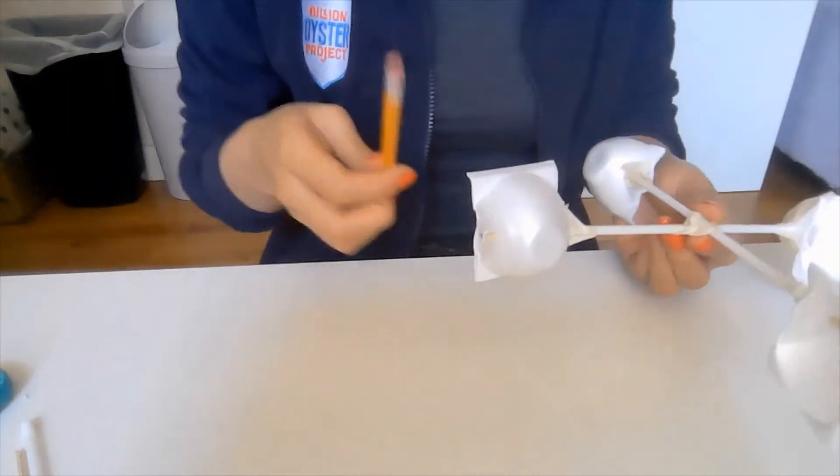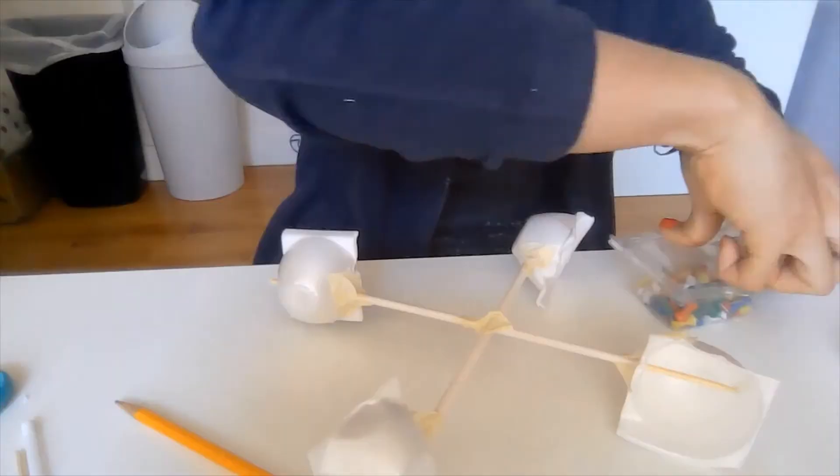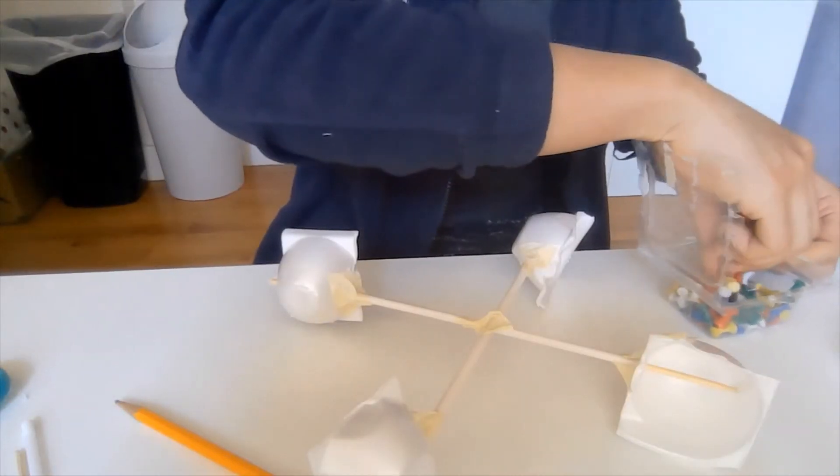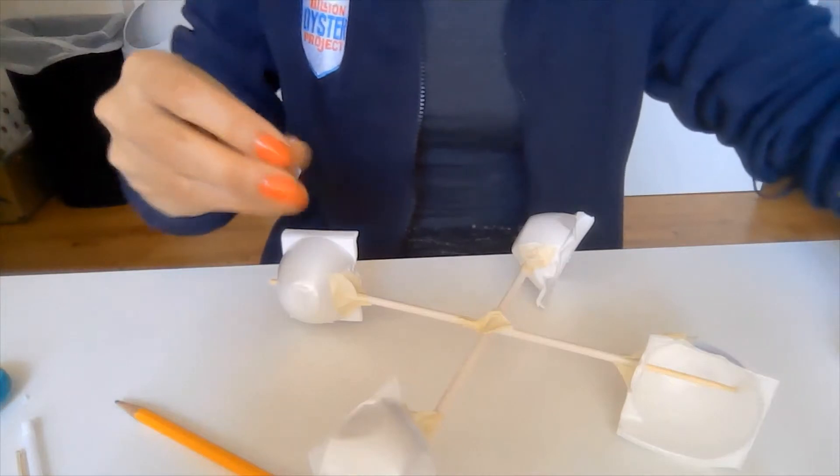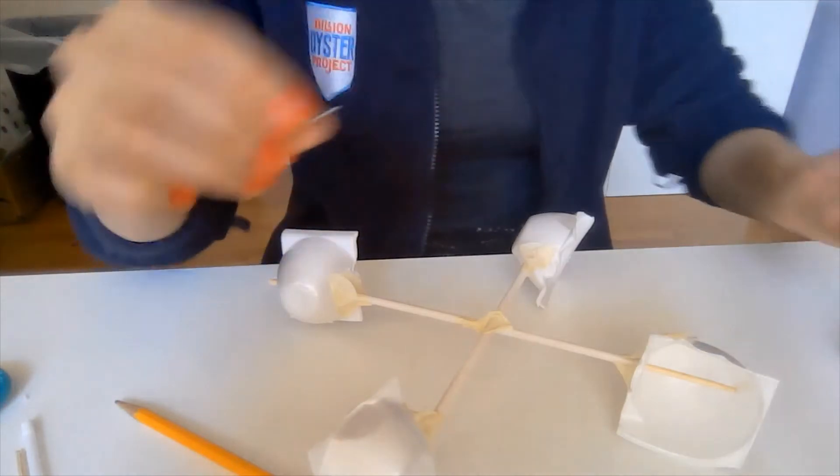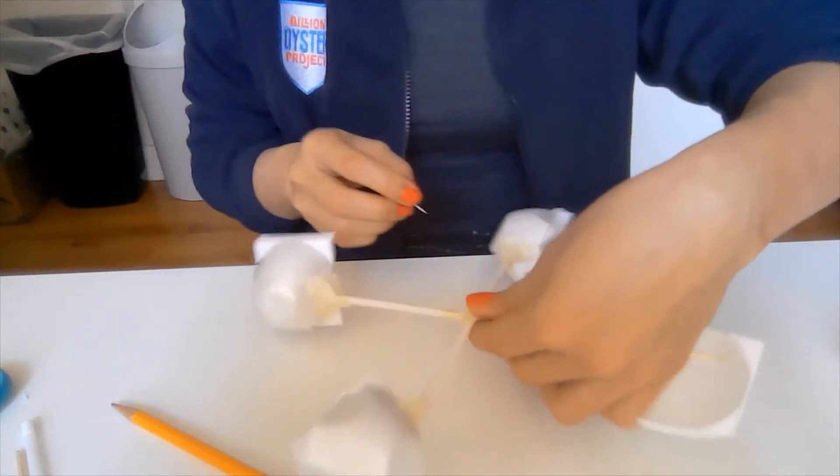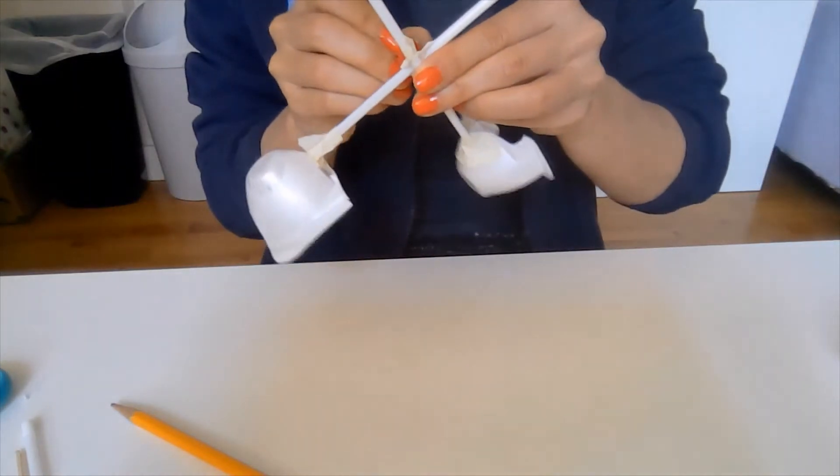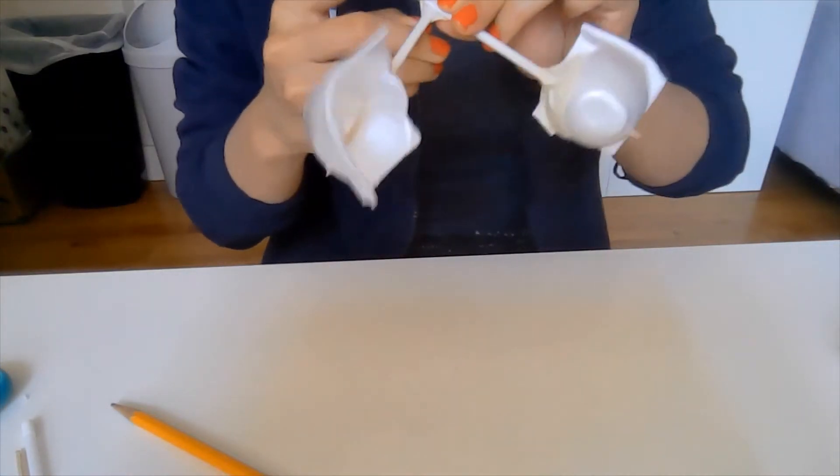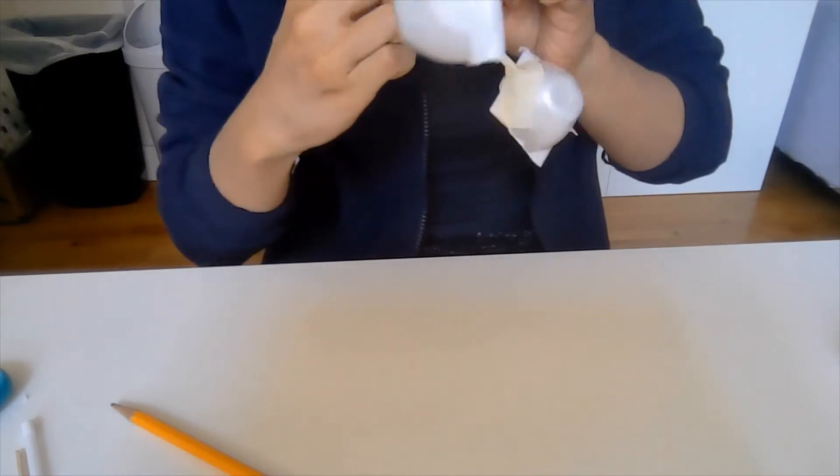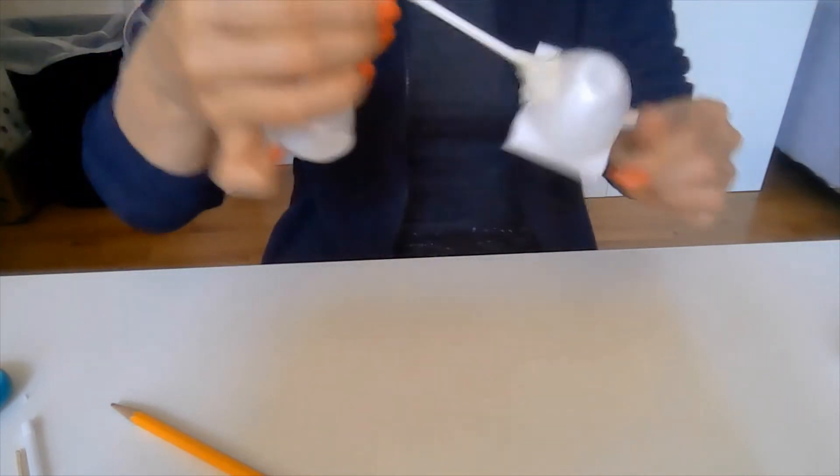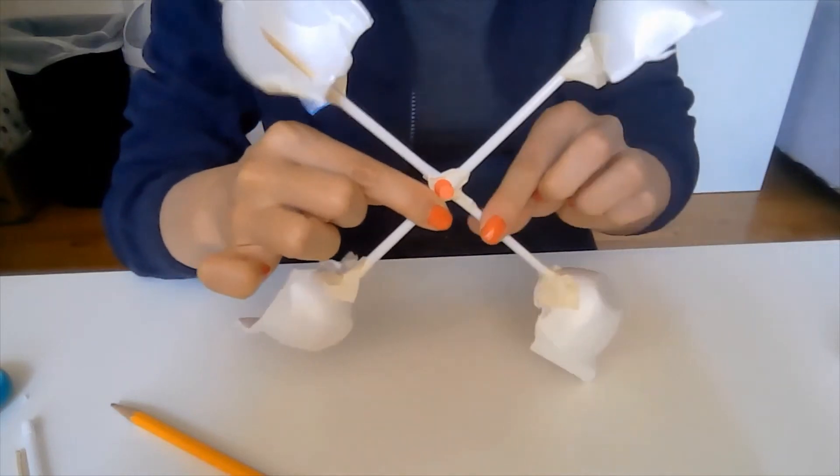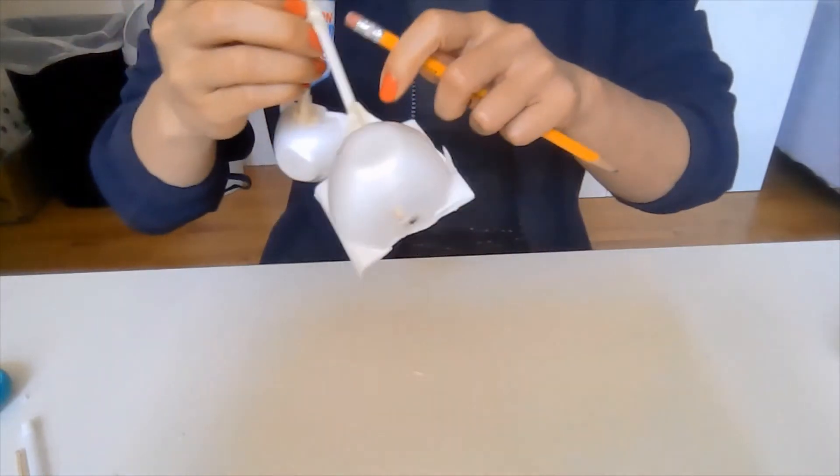Next, we are going to attach what we've made to a pencil. Take a thumbtack or a push pin and pierce the place where the straws have intersected. They are going to rotate from the point of the thumbtack or push pin. Once you've used your pin to push through the straws, you are then going to push it into the eraser of a pencil.